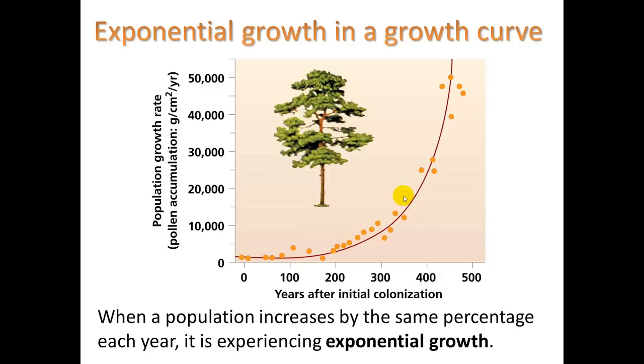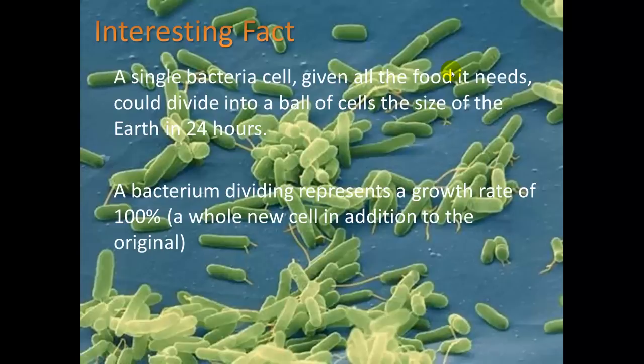We call these a J-curve because they swoop up like a J, and they can cause extremely rapid growth. A single bacteria cell, given all the food it needs, could divide into a ball of cells the size of the earth in 24 hours. In this case a bacterium dividing represents a growth rate of 100% — you get a whole new cell in addition to the original because it's splitting into two. Most of the time when we talk about exponential growth, we're talking about increases of 5 or 10 percent or even less, but this is a unique characteristic of bacteria because they split.